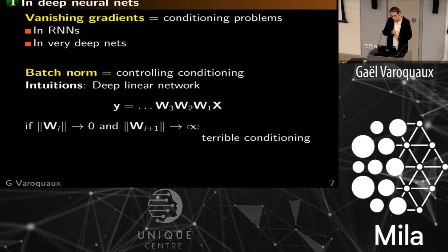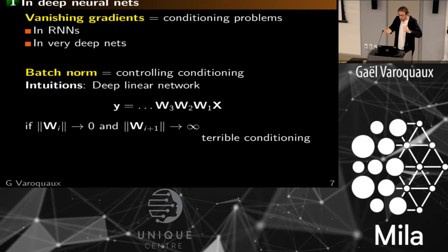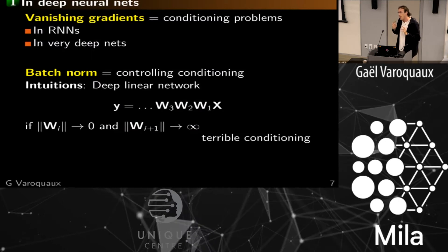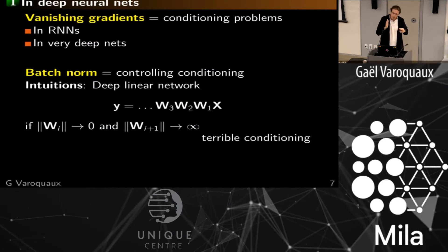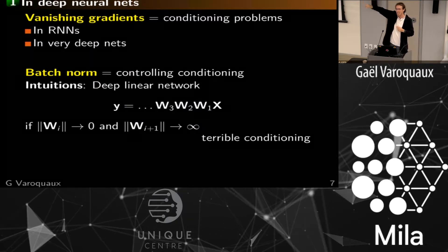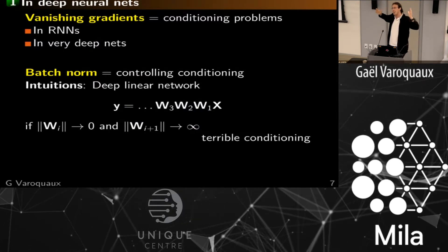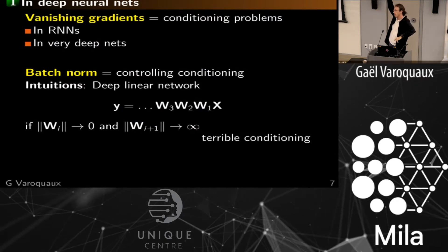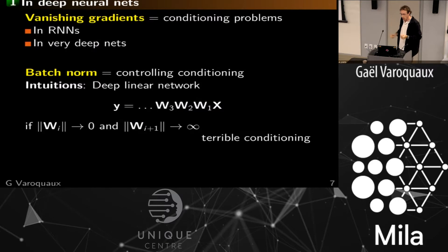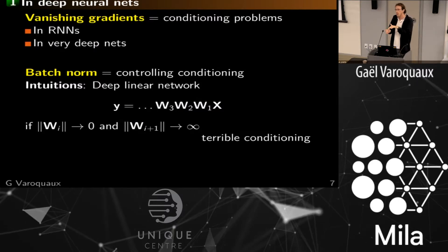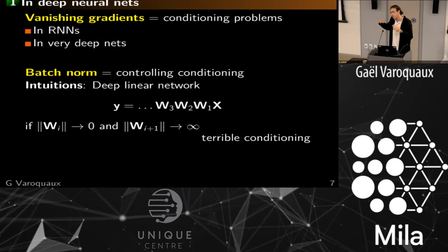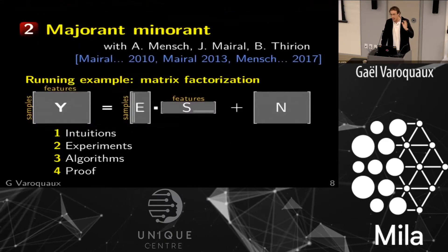People have looked at this as a conditioning problem and contributed very interesting work. Another related advance is batch norm — I like the view that batch norm somewhat controls conditioning, and there are conceptual results showing this. I like to think about a deep linear network, which is a product of many matrices. The problem is that I get the same output if one matrix goes very big and another goes very small — this instability creates bad conditioning — and batch norm somewhat addresses this.